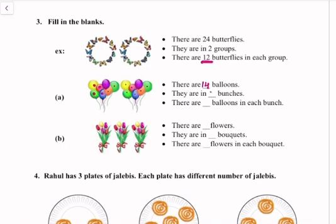The 14 balloons are in two bunches, with seven balloons in each bunch. There are also 15 flowers. They are in three bouquets, with five flowers in each bouquet.